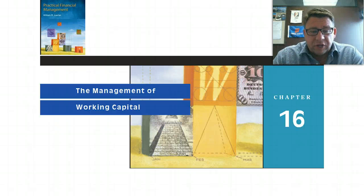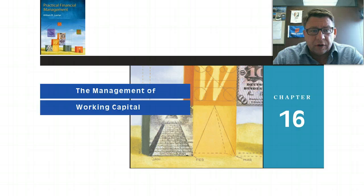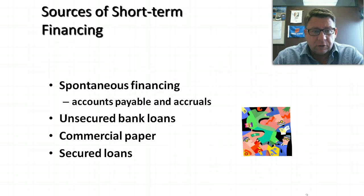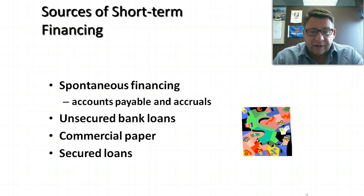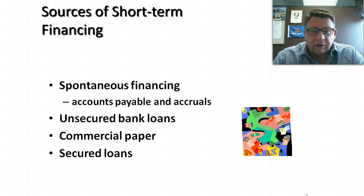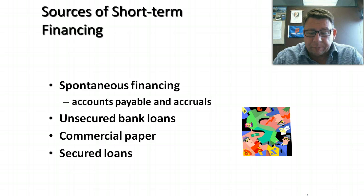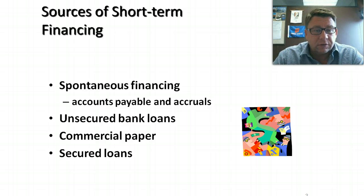Hi, welcome to this podcast of Chapter 16. It deals with our sources and dealing with short-term financing. We're going to look at spontaneous financing, which are accruals and accounts payable. We'll talk about bank loans, commercial paper, both unsecured and secured bank loans.